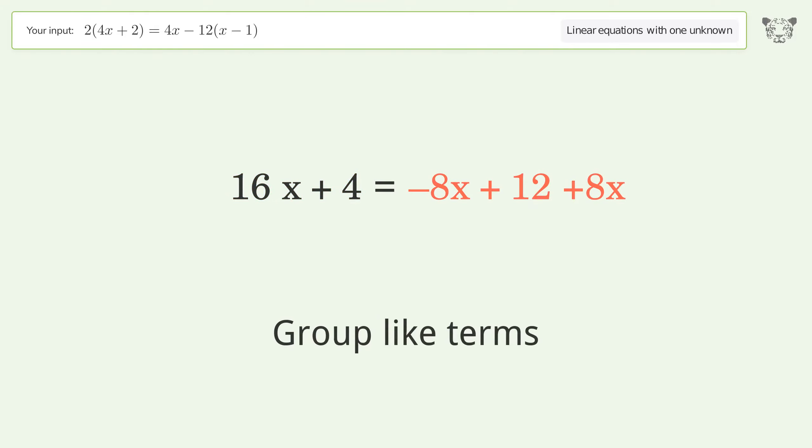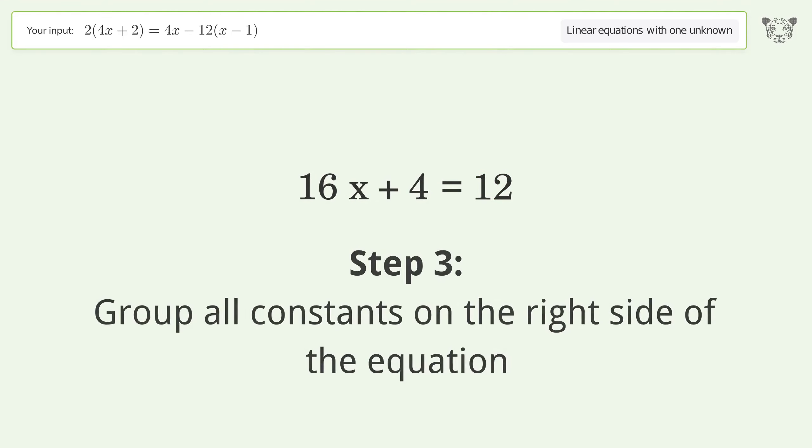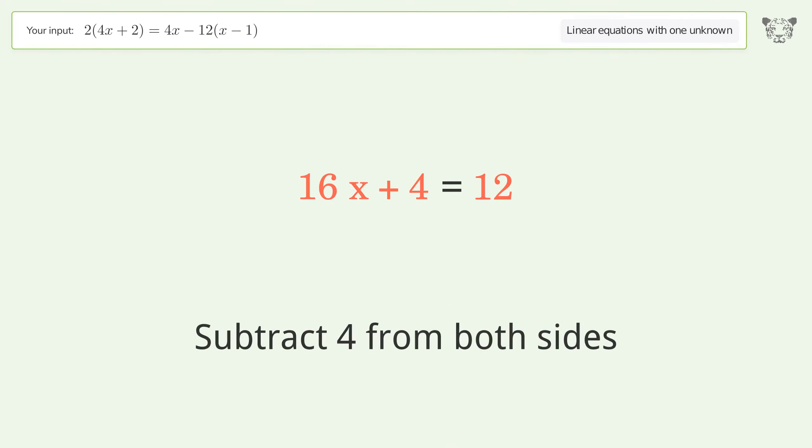Group like terms. Simplify the arithmetic. Group all constants on the right side of the equation. Subtract 4 from both sides.